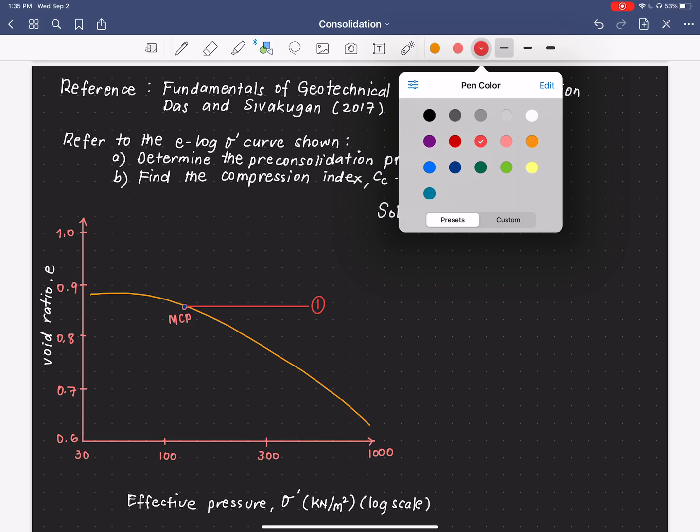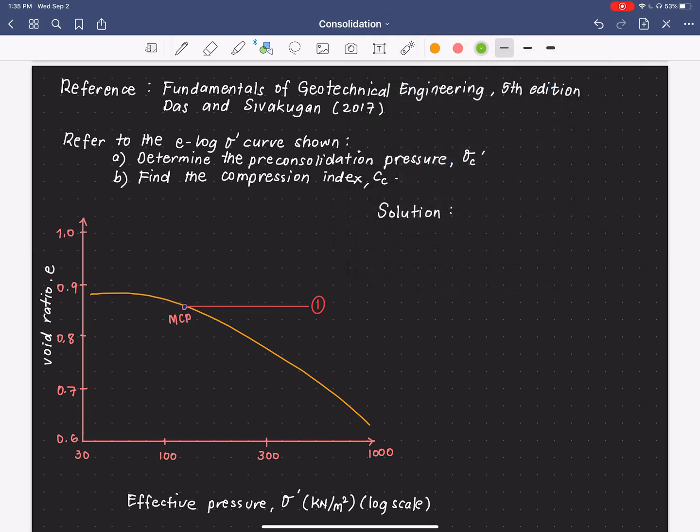The second step is to draw a line tangent at our MCP. Let us say that is that line. And this is our step two.